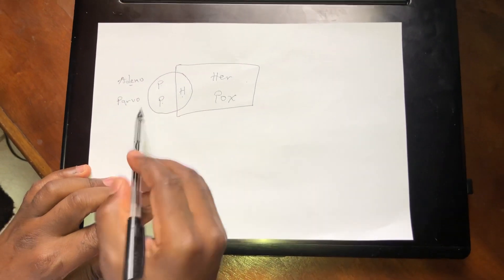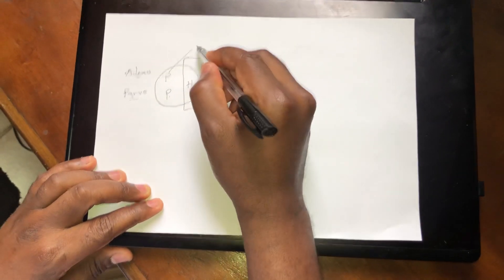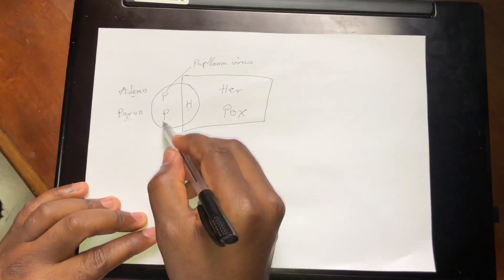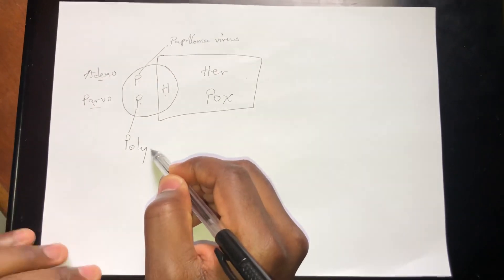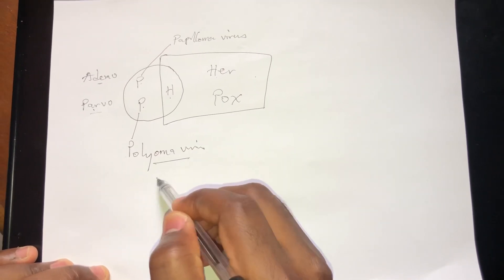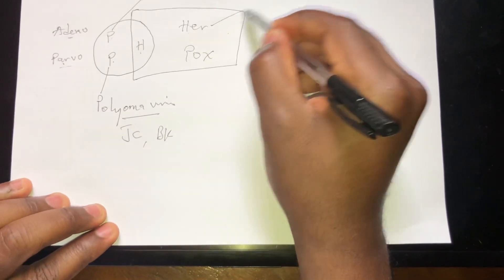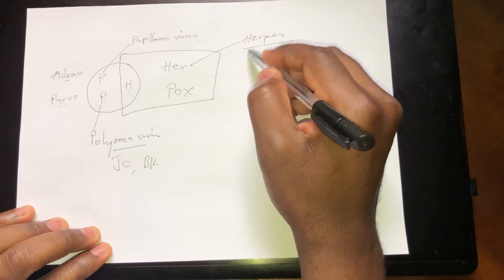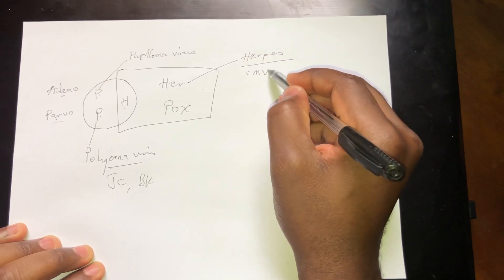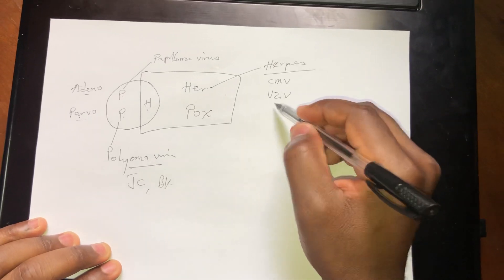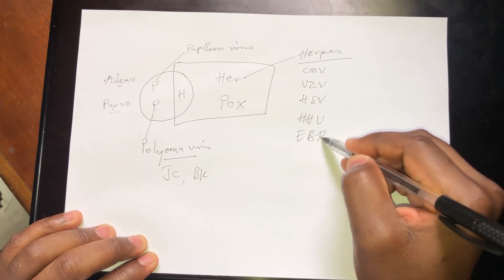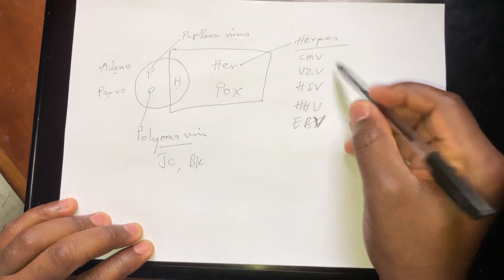This is Adenovirus, Parvovirus B19, this is the Papilloma virus, and this is the Polyoma virus. Under Polyoma, we have the JC virus and the BK virus. Now let's look at the Herpes viruses. So we have CMV, VZV, HSV, HHV, and also EBV. So these are the herpes viruses.